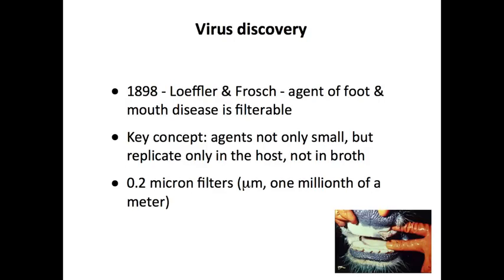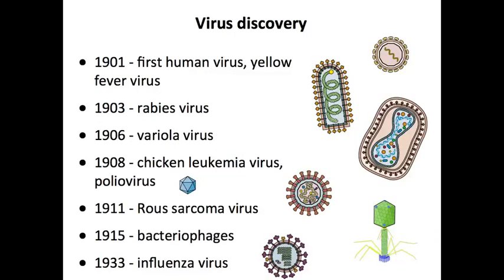Once those discoveries were made, the field exploded. We had many other viruses discovered. The first human virus in 1901 was yellow fever. Interestingly, influenza virus was not identified until 1933. This is very interesting because in 1918 there was a big outbreak of Spanish influenza, and it was not known that the agent was a virus at that time — only much later. And many, many more viruses have since been discovered.